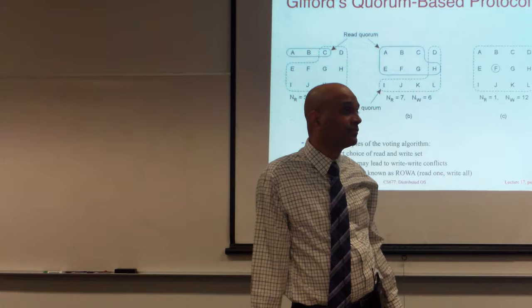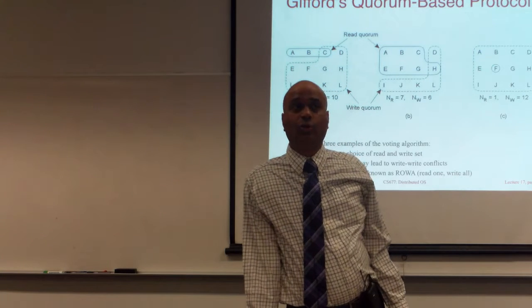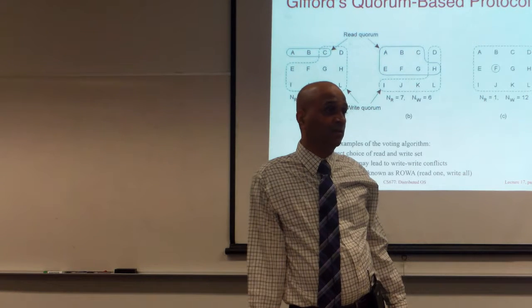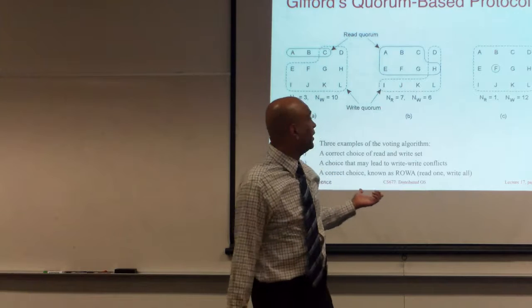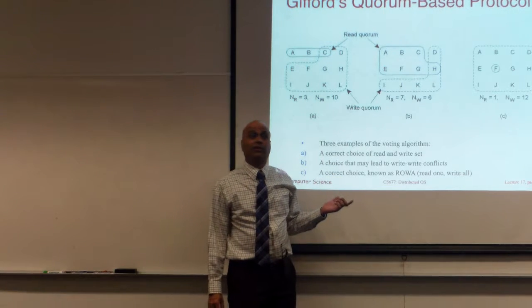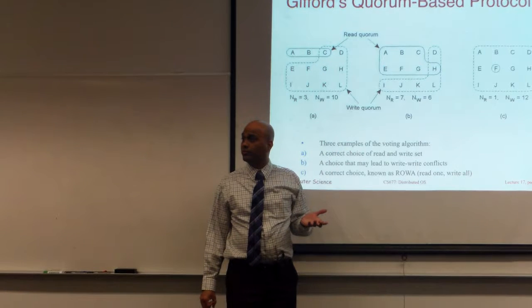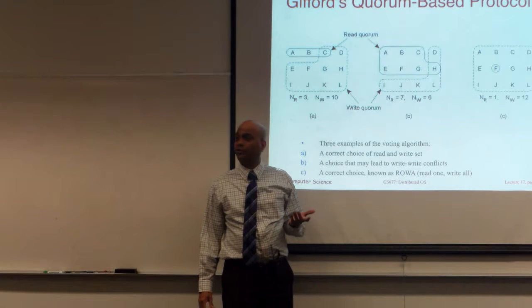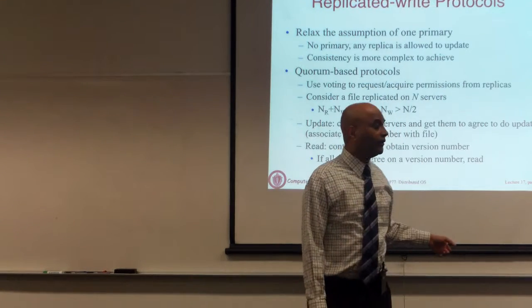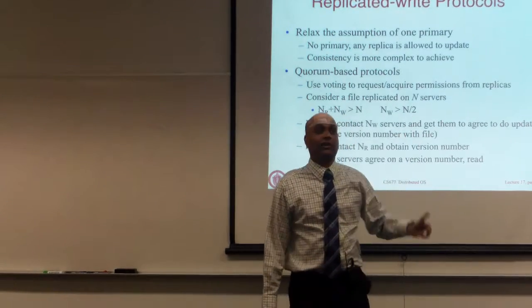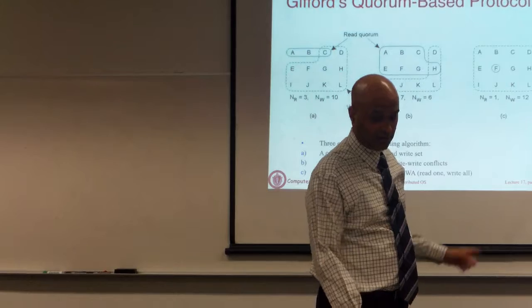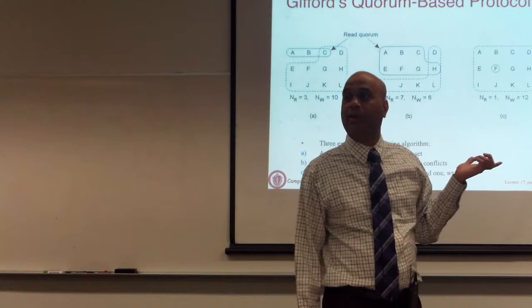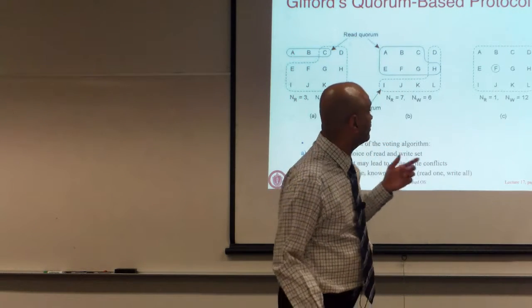If all writes go to all servers, the read quorum can be just 1 — you can pick any server and are guaranteed to get the most recent file. This is also called read-one write-all. You can pick any combination of read and write quorum so long as those two properties are satisfied. These are called quorum-based write protocols, which allow you to replicate writes and still have correctness guarantees. They work well in large distributed systems where data is replicated across many nodes.